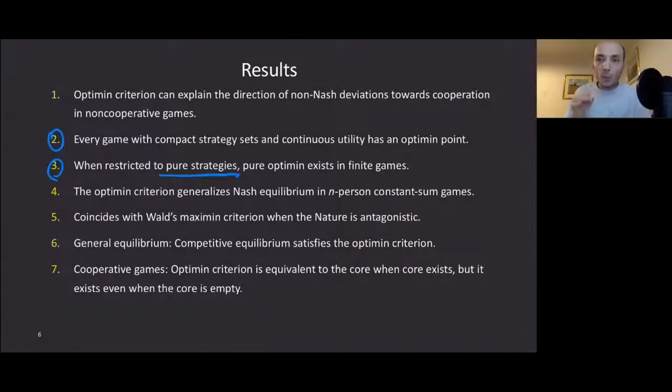Three, when restricted to pure strategies, pure Optimin point always exists in finite games. I especially like this property because if you work with mixed strategy equilibrium, it could be very tedious to calculate and computationally costly to find mixed strategy equilibria. And we know that pure strategy equilibrium may not exist. So first we can try to find the pure Optimin points, if there is an efficient algorithm. And then maybe once we find it as a benchmark point, we could try and compare and maybe find mixed strategy equilibria around this region.